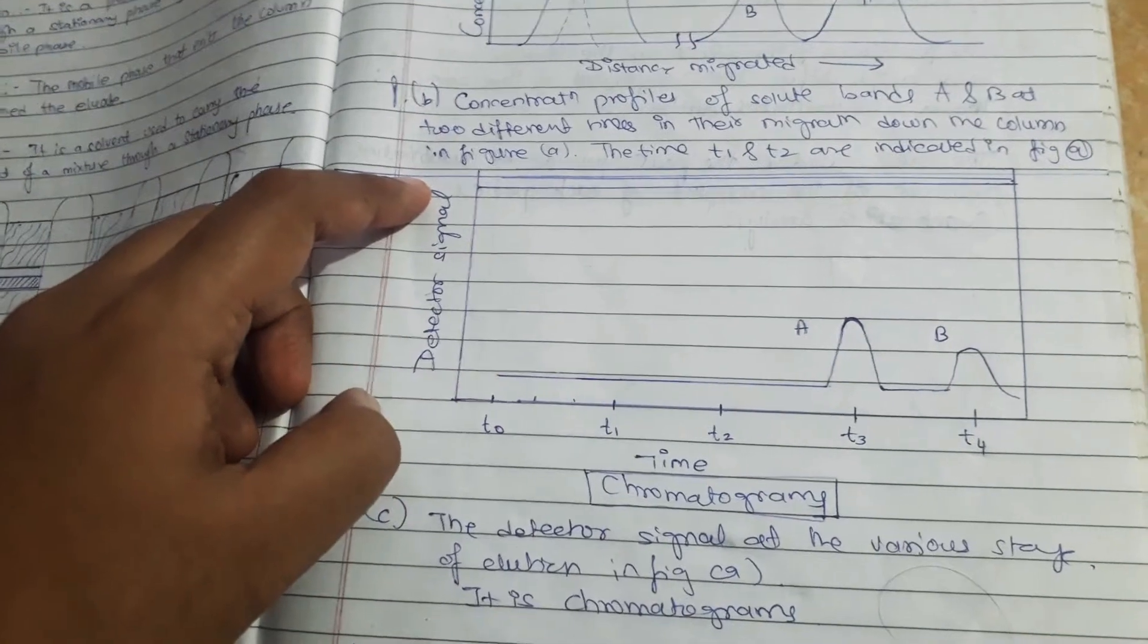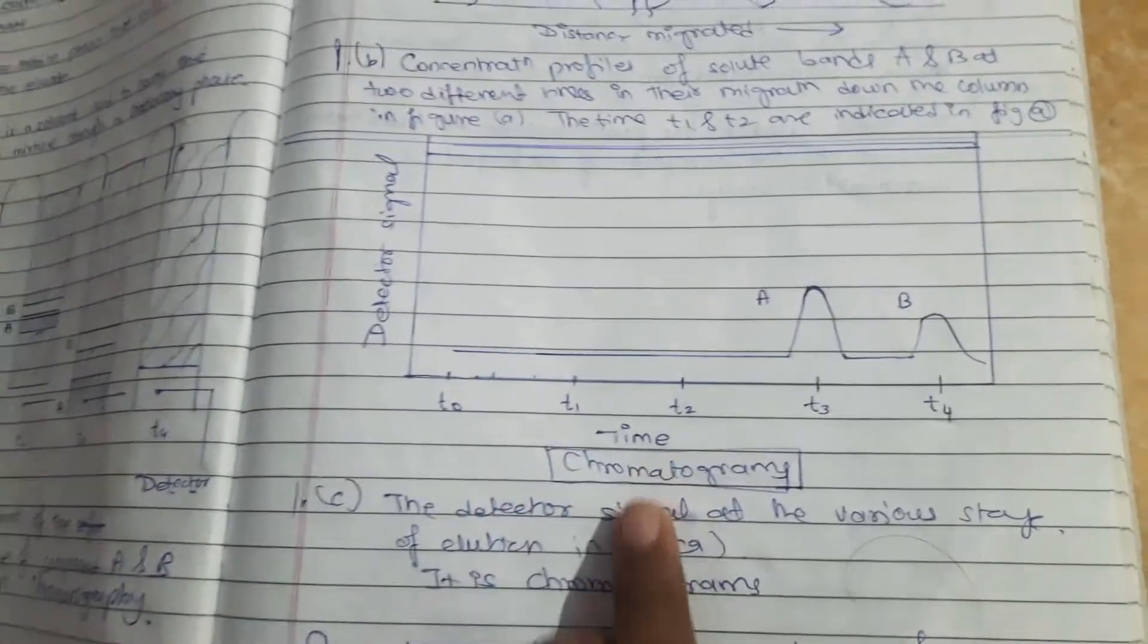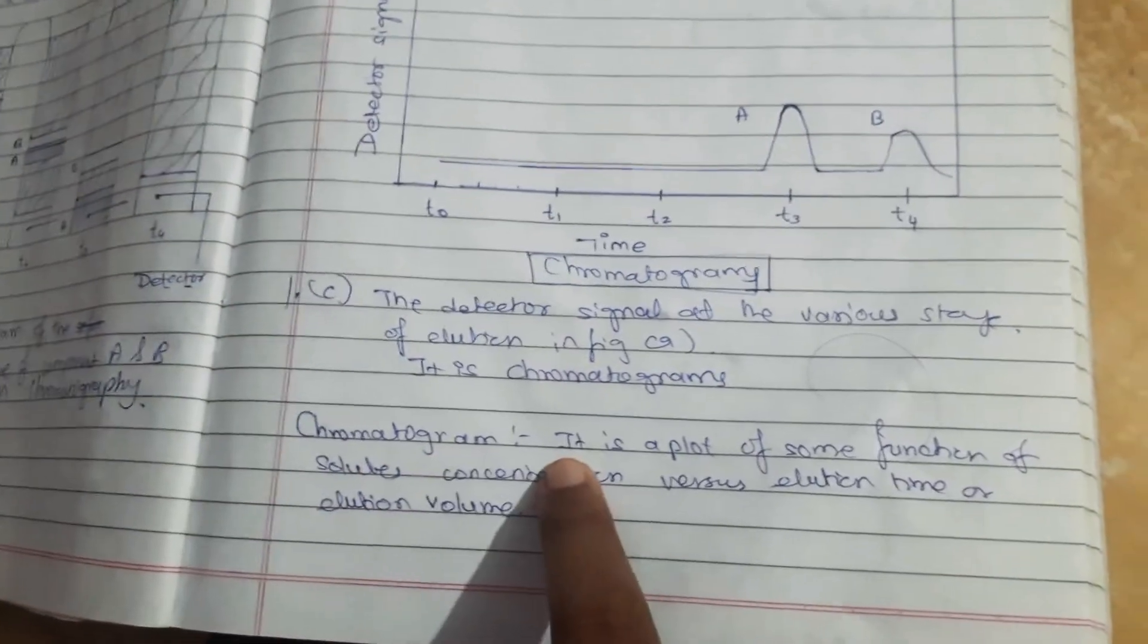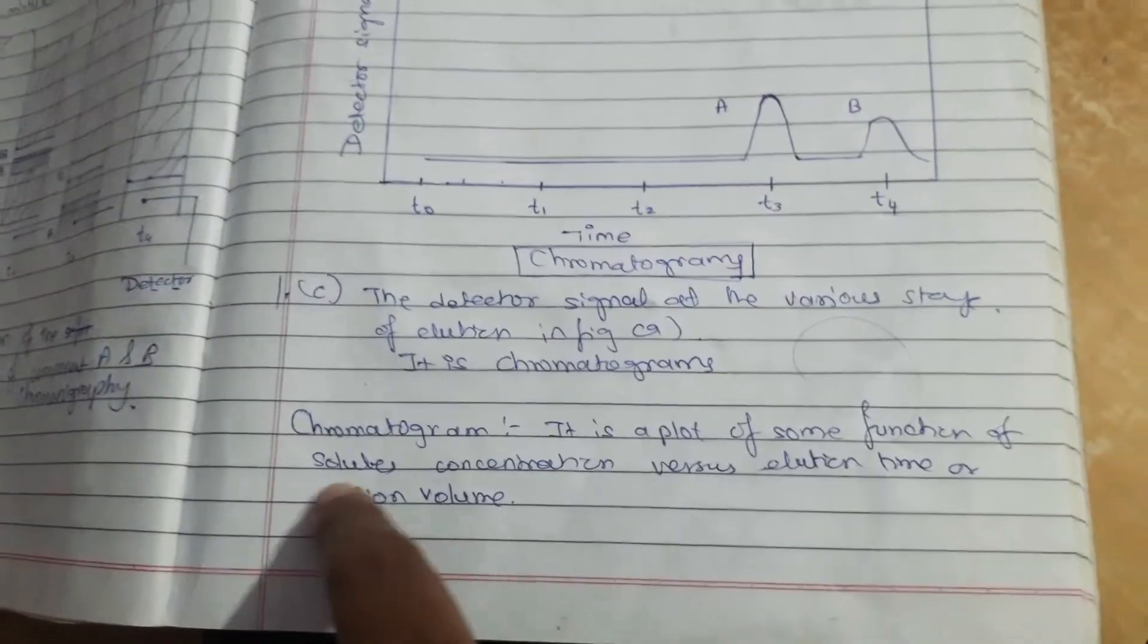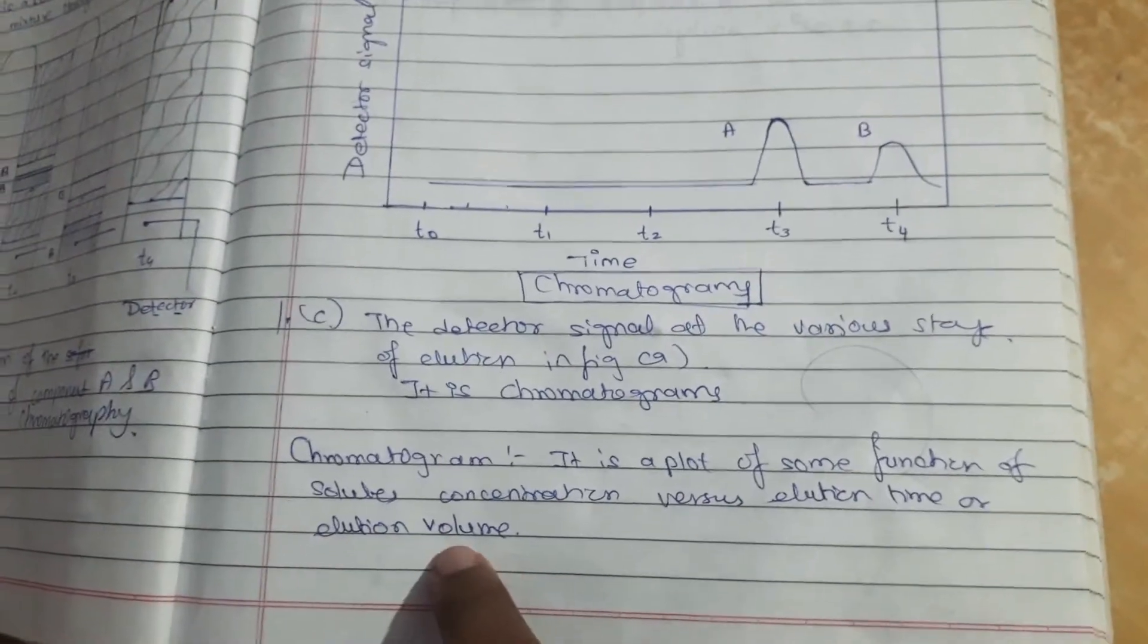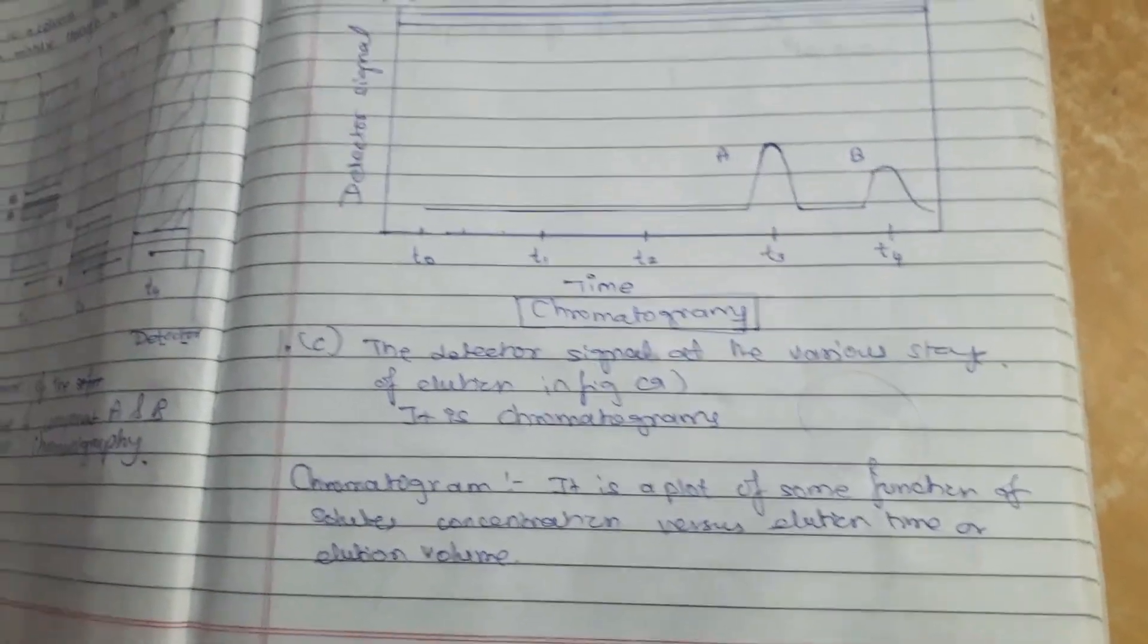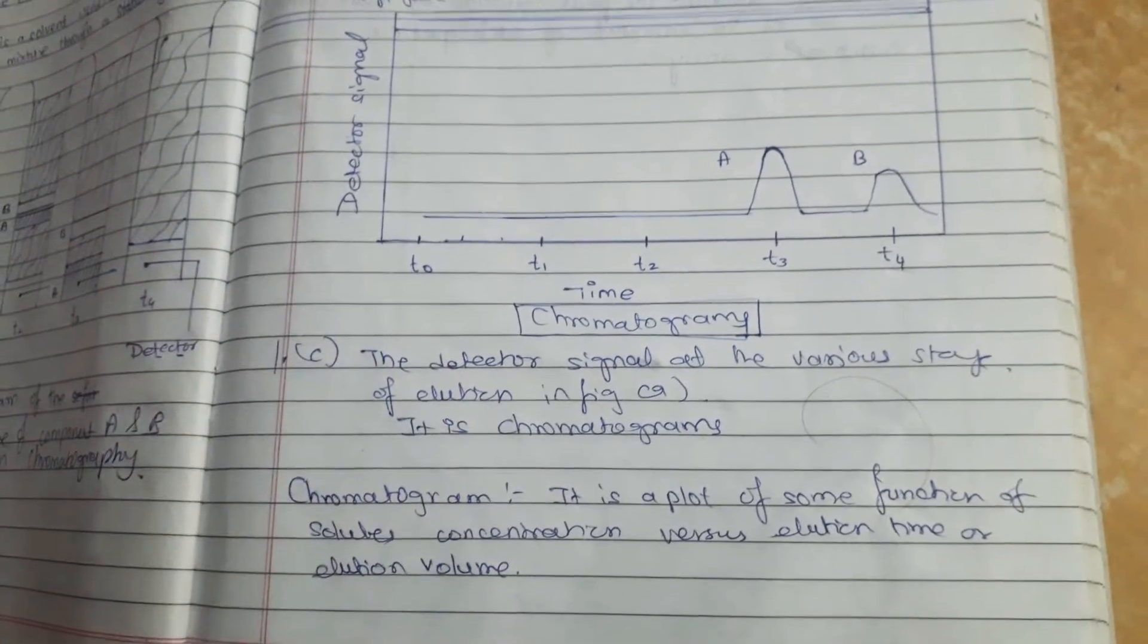On the y-axis it shows detector signal and the x-axis shows time. But instead of time there can also be volume. So a chromatogram is a plot of some function of solute concentration versus elution time or elution volume. This graph plot is a function of solute concentration and elution time or volume.